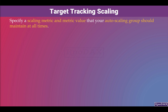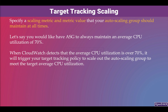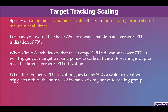Now let's talk about Target Tracking Scaling. In the Target Tracking Policy, you specify a scaling metric and metric value, and the policy makes sure your auto scaling group maintains that metric value at all times. For example, if you want your auto scaling group to always maintain an average CPU utilization of 70%, when CloudWatch detects the average CPU utilization is over 70%, it will trigger your target tracking policy to scale out the auto scaling group to meet the target average CPU utilization.